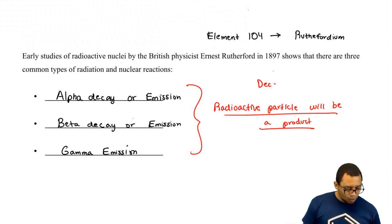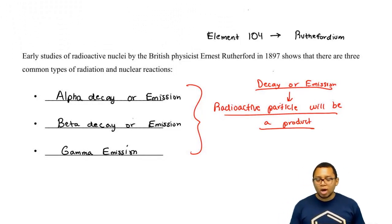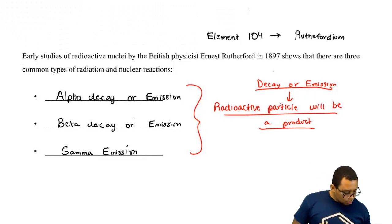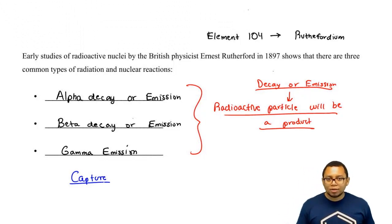So remember, if you hear the word decay or emit or emission, that means that the radioactive particle involved in all these reactions will be a product. Now, the opposite of decay or emitting would be the word capture. So capture would be the complete opposite. Capture would mean that the radioactive particle involved in each of these types of nuclear reactions would be a reactant.